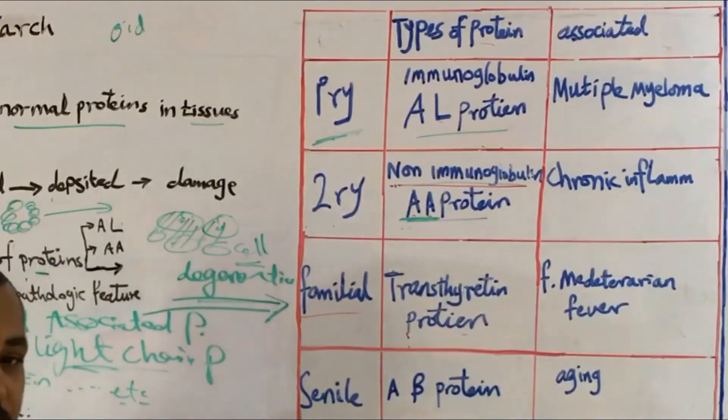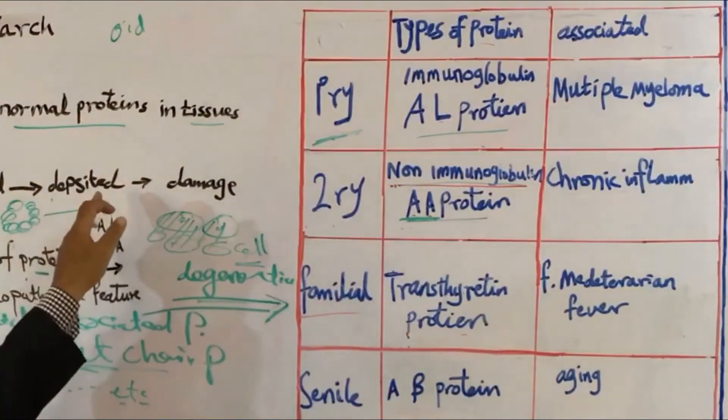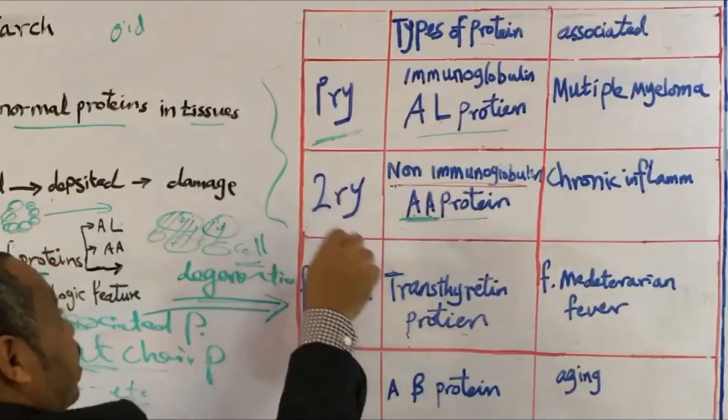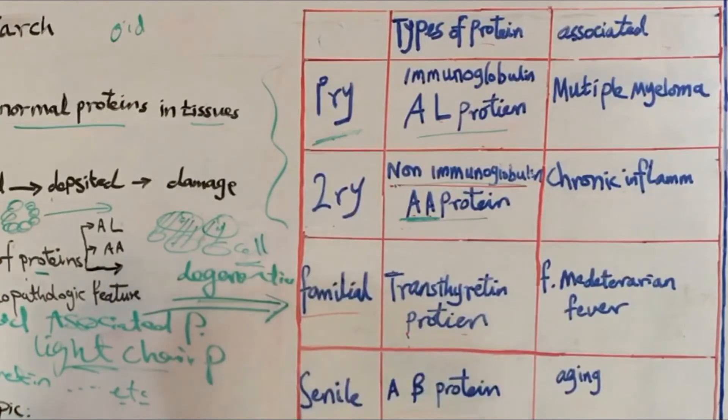And one of these acute phase proteins is amyloid associated protein. So it will be produced in excess and it will be misfolded. Then the next point is deposited in tissues and destroying those tissues or these cells. And these are normal proteins but are misfolded, to make life easy for you.